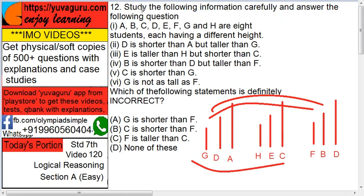Study the information carefully and answer the questions. A, B, C, D, E, F, G, and H are eight students with different heights. D is shorter than A but taller than G. E is taller than H but shorter than C. B is shorter than D but taller than F. C is shorter than G. G is not as tall as F.